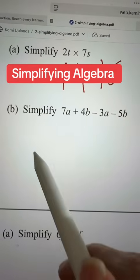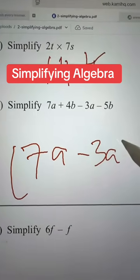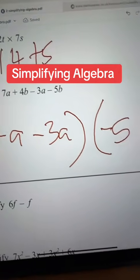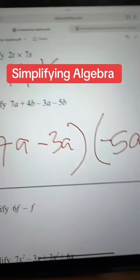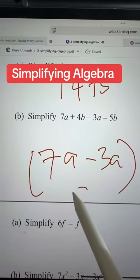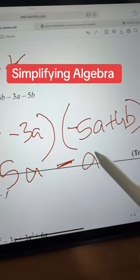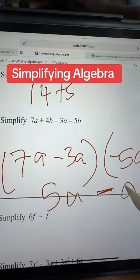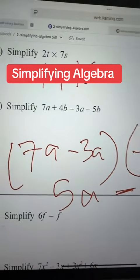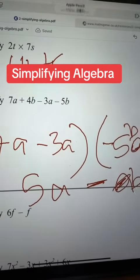So this one you will just put the a's together and the b's together. This is 5a minus a, sorry this is b, so minus b. Hope you understood it and you will be able to do your algebra nicely now.